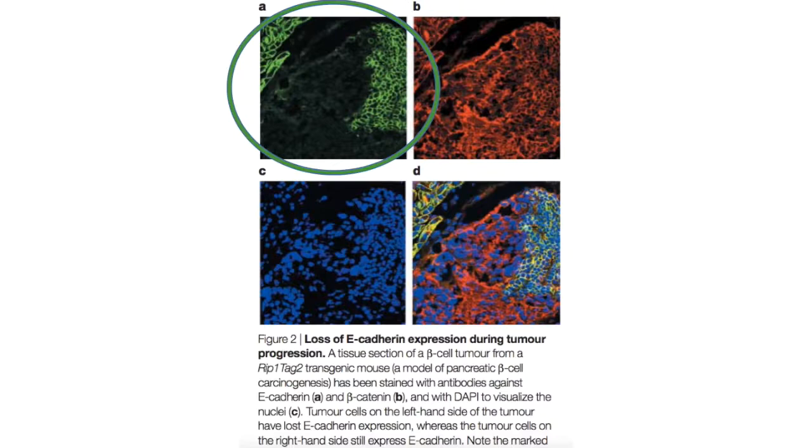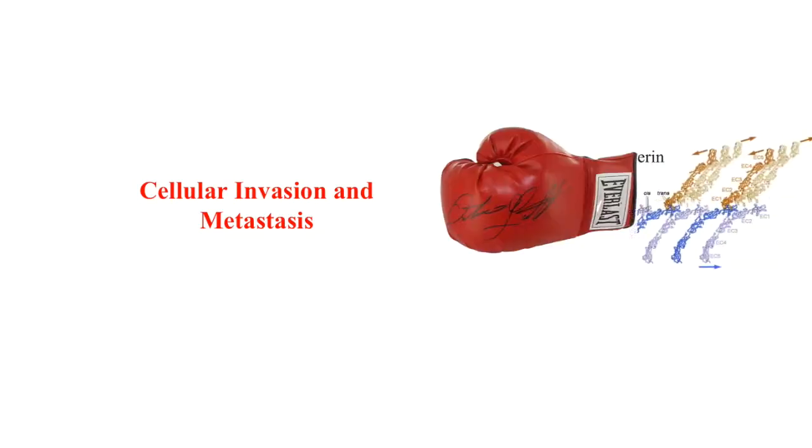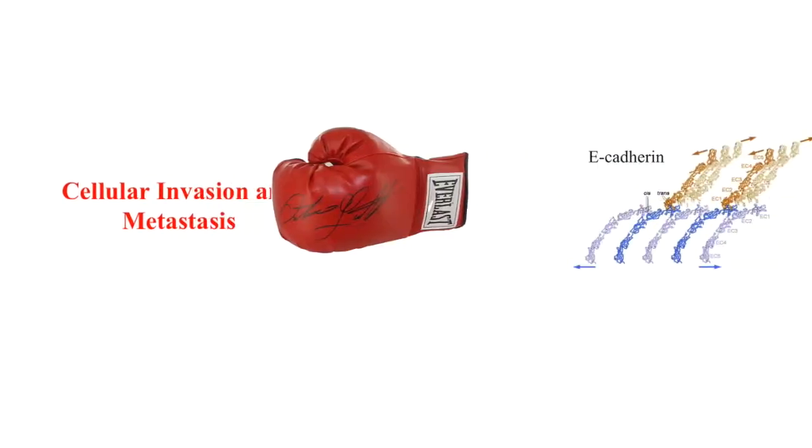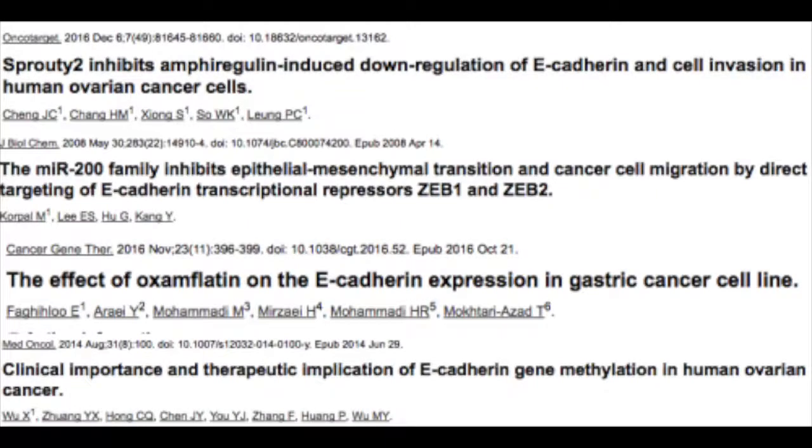Frequently observed downregulation and occasional mutational inactivation of E-cadherin in human carcinomas provide strong support for its role as a key suppressor of cellular invasion and metastasis. This is the reason researchers today are trying to develop cancer therapeutics which are targeting the increase of expression of E-cadherin in cancer cells with the hope to decrease tumor invasiveness.